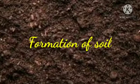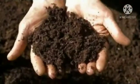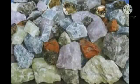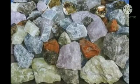Soil is the topmost layer of the earth's surface. It consists of a mixture of particles of broken rocks, minerals and decaying plants and animals.